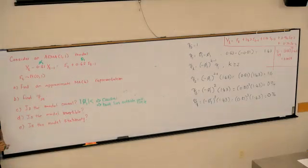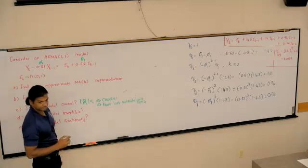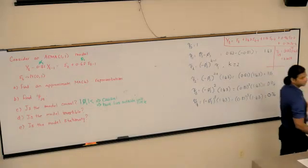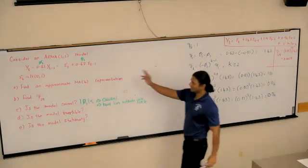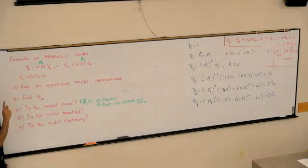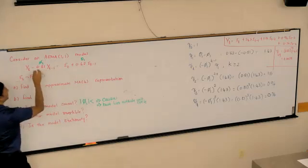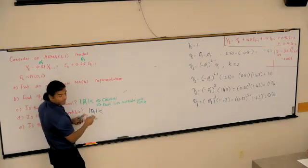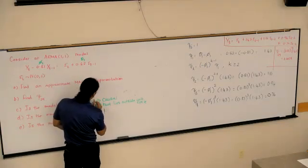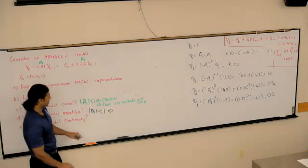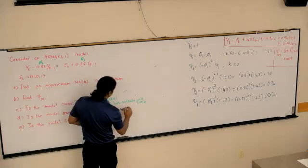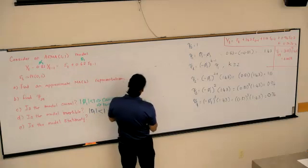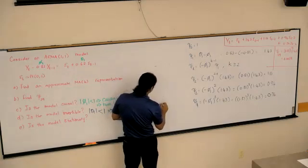Is it invertible? Yes. Invertibility comes from the MA side. Causality comes from the AR side. I'm looking at the MA side, the coefficient there. It's less than 1. Absolute value is less than 1. So it is invertible. The root of the characteristic polynomial on the right-hand side would lie outside the unit circle.